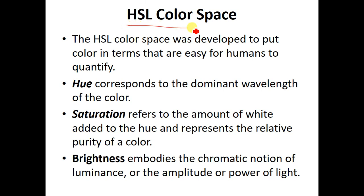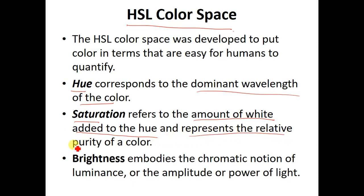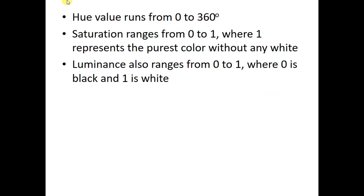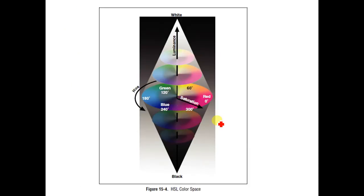Then we have the HSL color space. Hue corresponds to the dominant wavelength of the color. Saturation represents the amount of white added to the hue and represents the relative purity of the color. Brightness embodies the chromatic notion of luminance, amplitude, or power of light. Hue values range from 0 to 360 degrees, saturation varies from 0 to 1, and luminance also ranges from 0 to 1 where 0 is black and 1 is white.